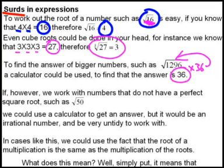If however we work with numbers that do not have a perfect square root such as √50, we could use a calculator to get an answer, but it would be an irrational number. And still it would be very untidy to work with because it is irrational, many decimal places.